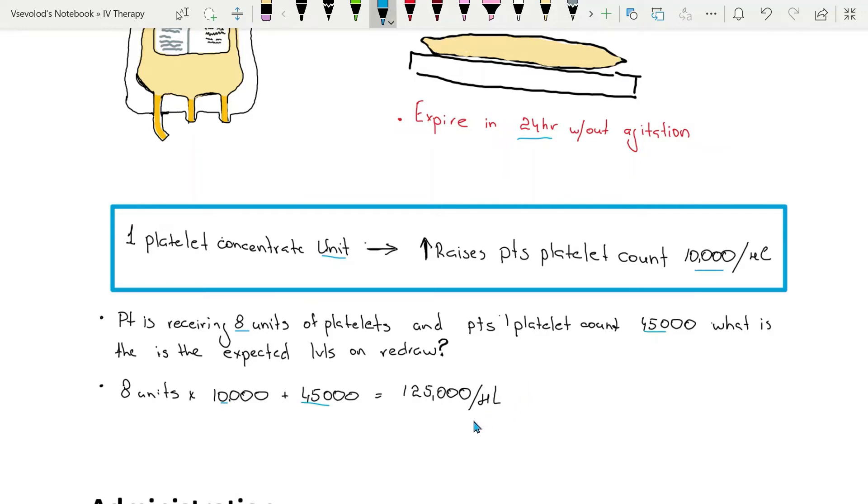So our result is 125,000 platelets per microliter, the expected value after 8 units of platelet transfusion.